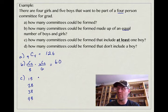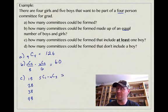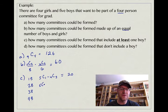So one boy would be 5C1 because there's one boy that we're choosing and then 4C3, the three girls. That gives us an answer of 20. Two boys would be 5C2 and then 4C2, two boys and two girls, which we just found out is 60.